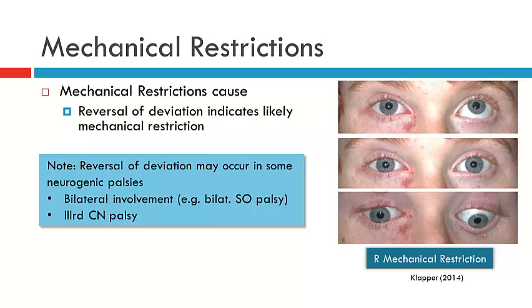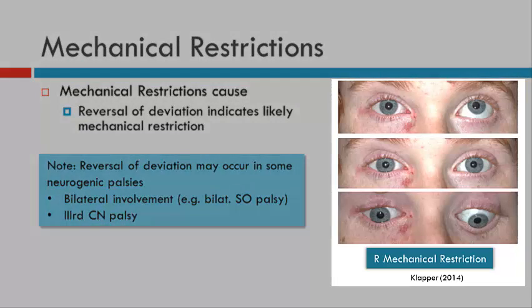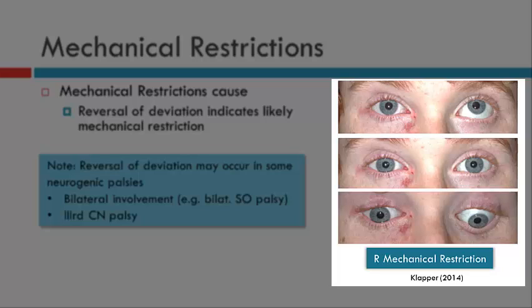Another feature of mechanical restrictions is that they can cause reversal of the deviation — an actual change in the direction of deviation. For instance, a right hyper deviation can change to a right hypo deviation in a specific position of gaze. In the example shown, the patient looks relatively straight in primary position, has limited elevation of the right eye in up gaze with a left-on-right deviation, and then in down gaze shows reversal of the hyperdeviation to a right-on-left. This theoretically defies Hering's and Sherrington's laws, indicating mechanical restriction.